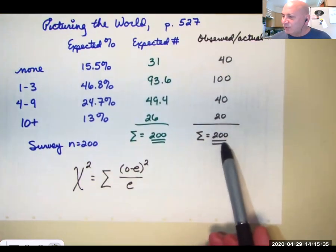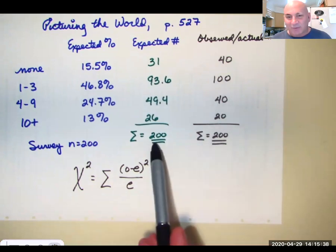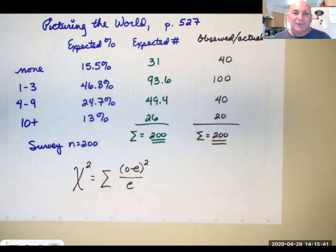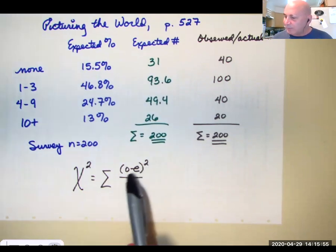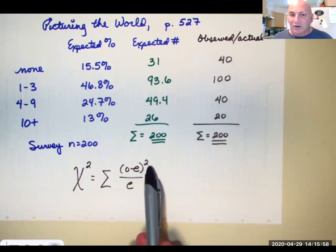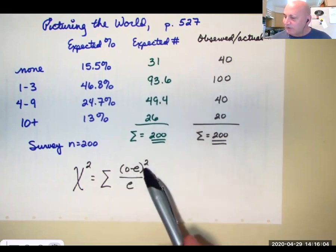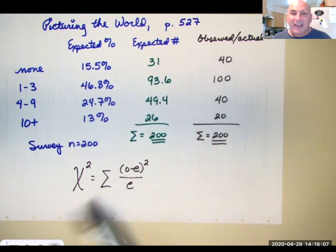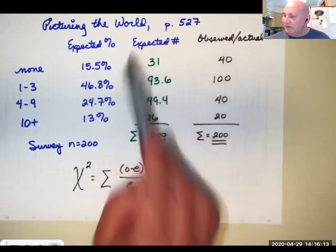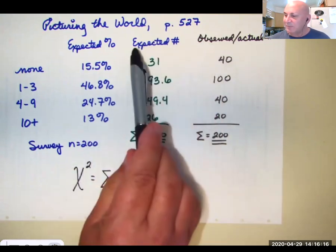Now again, your observed and actual counts have to add up to the same number as your expected counts, which has to add up to your sample size. And if that doesn't happen, your test isn't going to come out right. So to calculate the chi-squared statistic, we take observed minus expected quantity squared divided by expected. O minus E quantity squared divided by E. Then you add them all up and that's your chi-squared statistic.